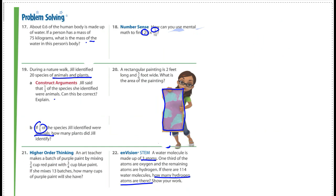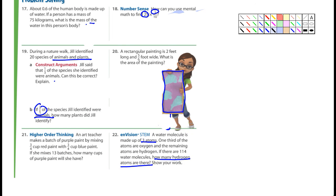Okay, next page. Problem solving. Number 17. It says about 0.6 of the human body is made up of water, and if a person has a mass of 75 kilograms, what's the mass of the person's water in this person's body? Well, you know it's going to be 75 times 0.6. And you could set this up if you wanted as 75 times, and you could put 0.6. It's going to be the same thing. And then just don't forget to move the decimal over after you get your answer. So I want you to do 17, I want you to do 18, 19, 20, 21, and 22.